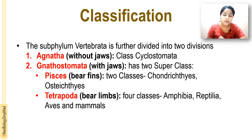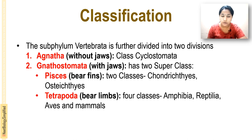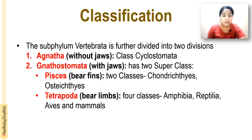In the first place you can see that the subphylum Vertebrata is the classification of vertebrata. In the previous videos we discussed about the classification of animals and studied about the vertebrata. Subphylum Vertebrata is further divided into two divisions: Agnatha and Gnathostomata.